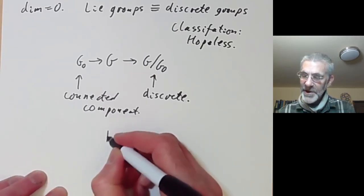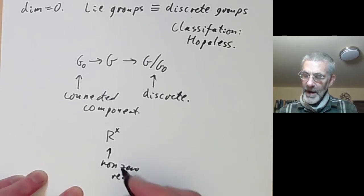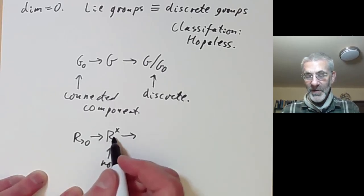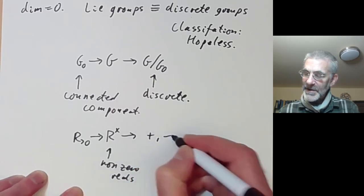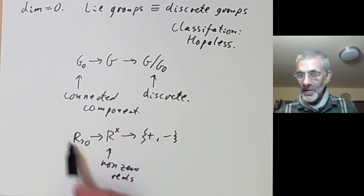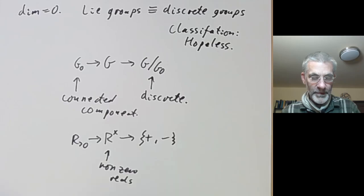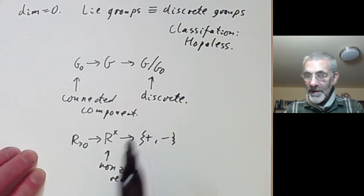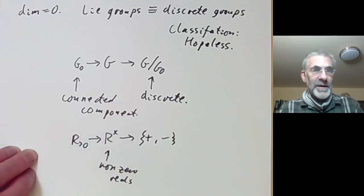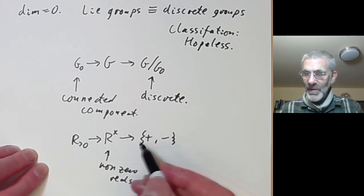A typical example: take G to be the group of non-zero reals. It has a connected component consisting of the positive reals under multiplication, and if you take the quotient of the non-zero reals by the positive reals you get a little group with two elements, because a real can either be positive or negative. So any Lie Group has a connected normal subgroup and a discrete quotient. The theory of Lie Groups really concentrates largely on connected Lie Groups; some authors even add connectedness to the definition, though it's often useful to allow non-connected Lie Groups.